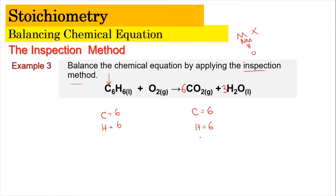Now oxygen. On the right-hand side: 6×CO2 gives 12 oxygen, plus 3×H2O gives 3 oxygen — total 15 oxygen. On the left-hand side, O2 has only two per molecule. Since we need 15 and the molecule is O2, we put 15/2 in front of O2: 15/2 times 2 equals 15 oxygen. So the balancing coefficient for O2 is 15/2.